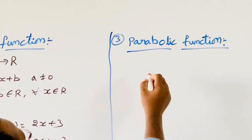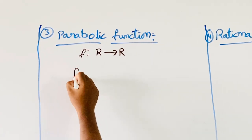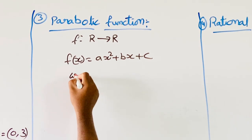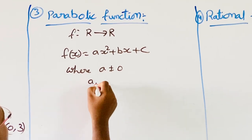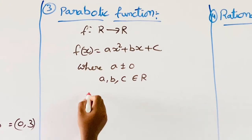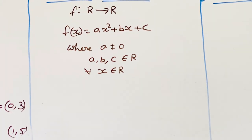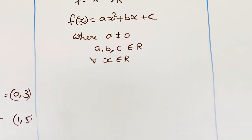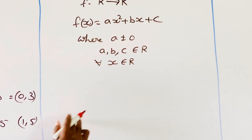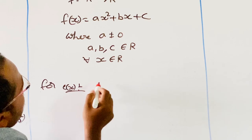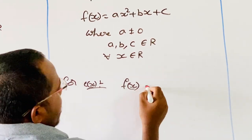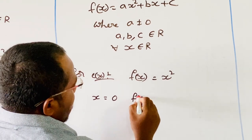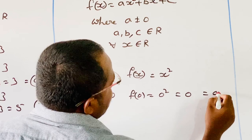Next, the parabolic function. A function f mapping R to R, f of x is equal to ax squared plus bx plus c, where a is not equal to 0, a, b, c belong to R, and for all x belonging to R. The parabolic function is also a particular type of polynomial function of degree 2. For example, f of x is equal to x squared. When x is 0, f of 0 is 0 squared, equal to 0; the point is (0, 0).